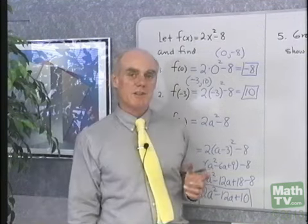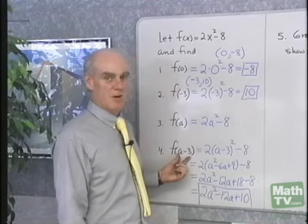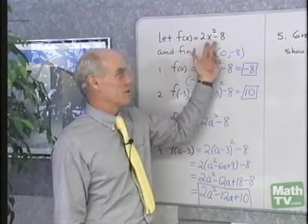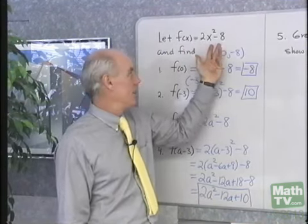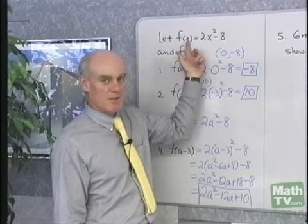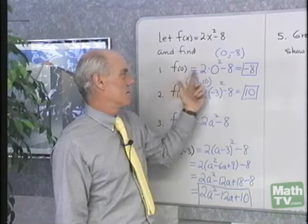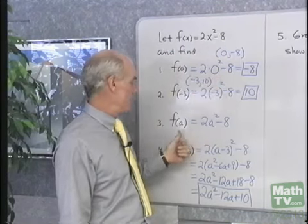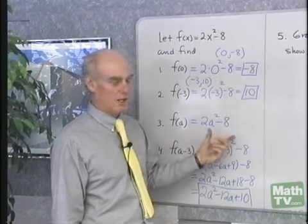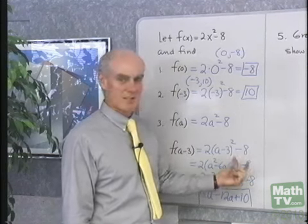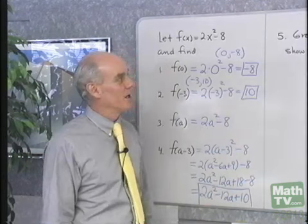Okay, so the point of this is it doesn't matter what's in these parentheses right here. These are all substitution problems. Once we know that f(x) is 2x squared minus 8, then that's what f does to whatever's in the parentheses. When it's x, you get 2x squared minus 8. When it's 0, 2 times 0 squared minus 8. When it's a, 2 times a squared minus 8. When it's a minus 3, 2 times (a-3) squared minus 8. It's the same thing every time.